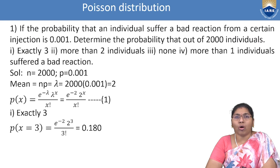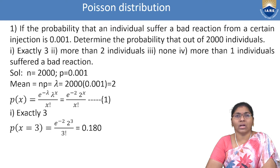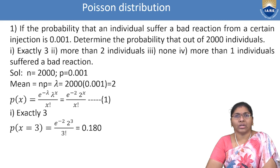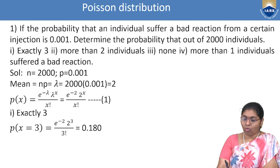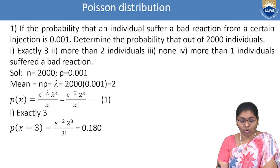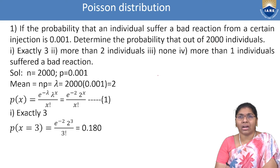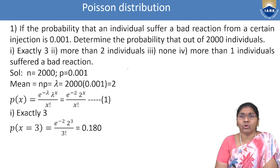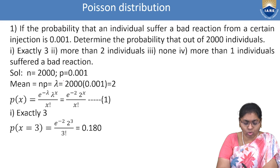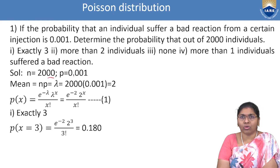Problem: If the probability that an individual suffers a bad reaction from an injection is 0.001, determine the probability that out of 2000 individuals, exactly 3, more than 2, none, and more than 1 suffer a bad reaction. Here n = 2000, p = 0.001, so λ = np = 2000 × 0.001 = 2.